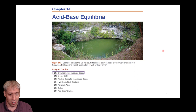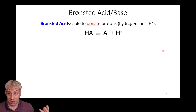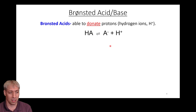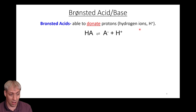The Bronsted-Lowry definition of acids and bases — in contrast to the Lewis or Arrhenius definitions — is very particular: acids are able to donate protons in the form of H+. Sometimes it's referred to as protons, sometimes hydrogen ions, sometimes written as H+. The point is, any species that gives up an H+ is an acid.